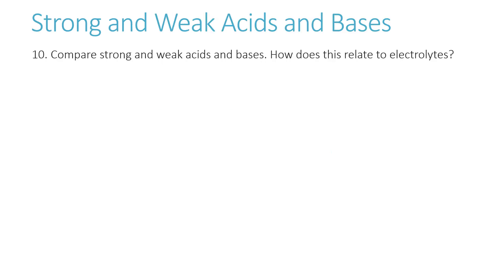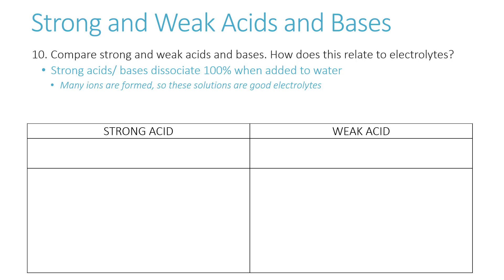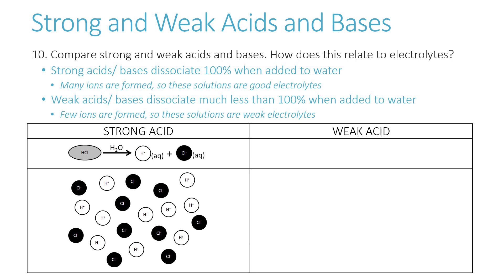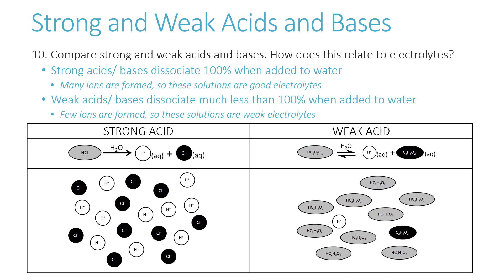Compare strong and weak acids and bases and how this relates to electrolytes. Strong acids and bases dissociate 100% when added to water, forming many ions, so they're good electrolytes. For example, every hydrochloric acid molecule breaks apart into hydrogen ions and chloride ions — lots of ions means good conductivity. For weak acids, however, dissociation is much less than 100%. In the reaction mixture, only a small fraction of molecules dissociate, so few ions are formed and these solutions are weak electrolytes.